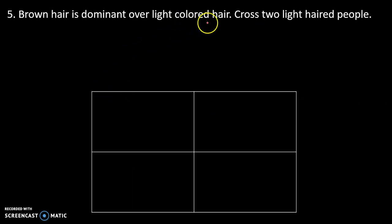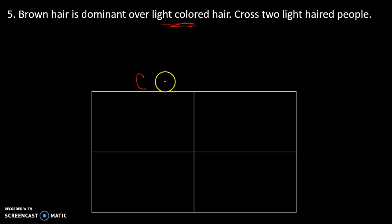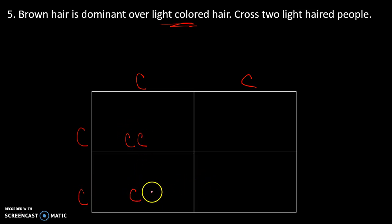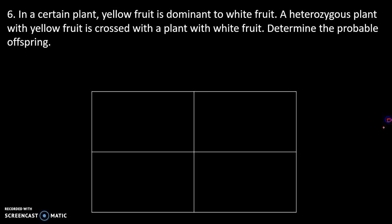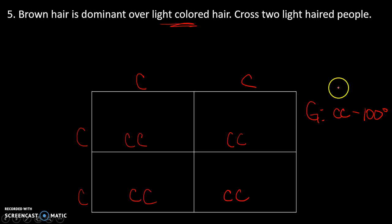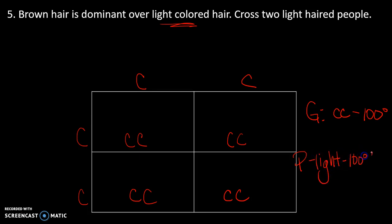Number five: brown hair is dominant over light colored hair. Cross two light-haired people. If light hair is recessive — I'll use c, so lowercase c lowercase c — then every offspring is going to have that homozygous recessive genotype, which means every offspring is going to have light hair 100% of the time.